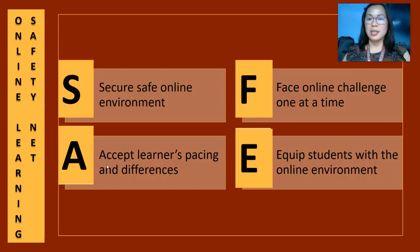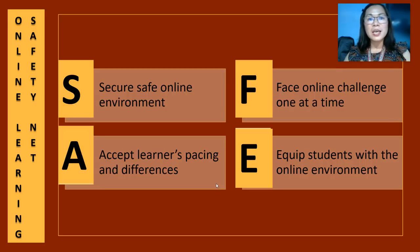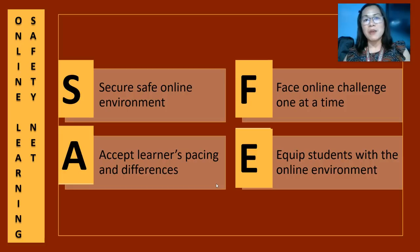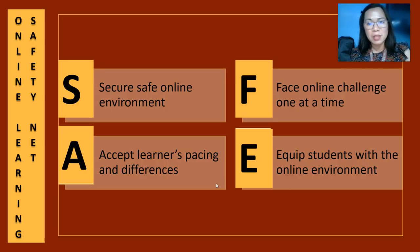We can be flexible in the way we treat requirement submissions. F is for Face online challenges one at a time — to do this, we need to plan our schedules because our work entails preparation of materials, videos, presentations, assessments, assignments, and more. E is for Equip yourselves with the online environment — if we are new to the new normal setup, let us not be shy to reach out to someone familiar with the e-learning environment, or use YouTube, which has many tips to offer. We must sometimes feel anxious about everything, but we are expected to brace the waves of online learning.